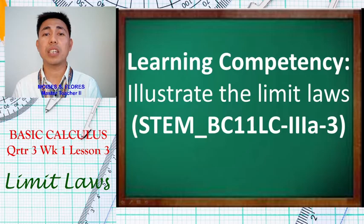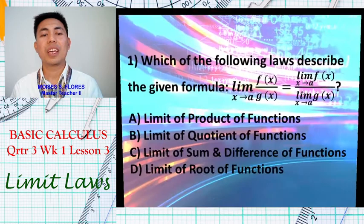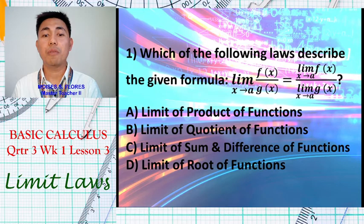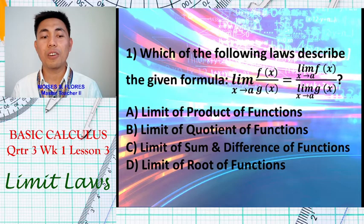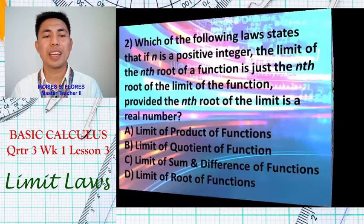I'll be presenting some guide questions as an overview of our lesson. The first question: which of the following laws describes the given formula — the limit of f(x) over g(x) as x approaches a, equals the limit of f(x) as x approaches a, all over the limit of g(x) as x approaches a? Choices: limit of product of functions, limit of quotient of functions, limit of sum and difference of functions, or limit of root of functions?